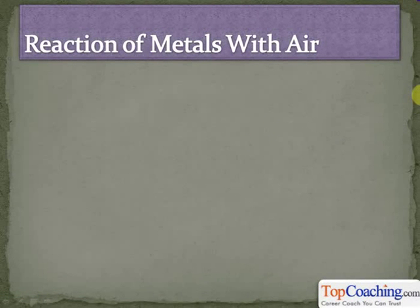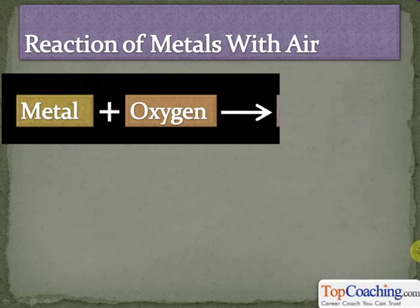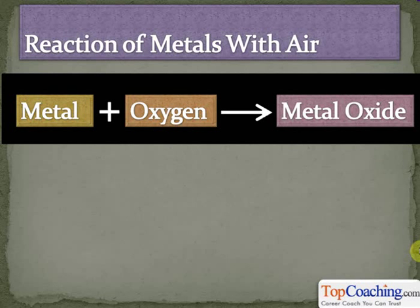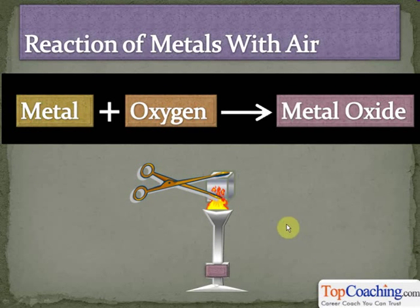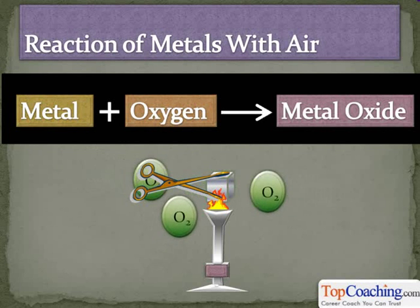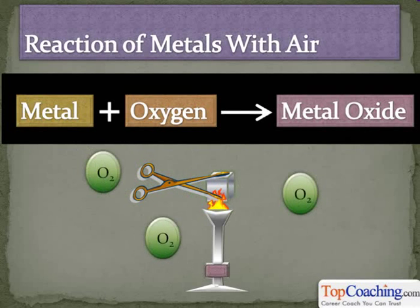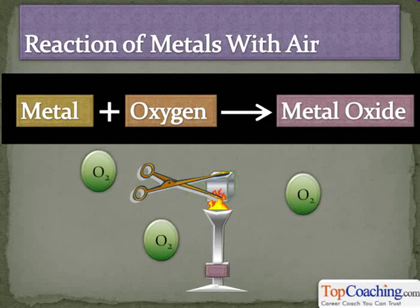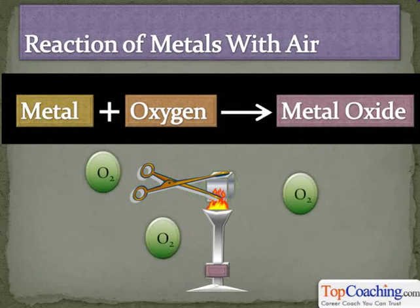Let's first begin with the reaction of metals with air. What happens when a metal reacts in air? Air contains oxygen and nitrogen — oxygen forms 21% of the air and nitrogen forms 79%. However, the nitrogen in the air is mostly inert, so metals don't react with it. They react with the oxygen of the air to form a special compound called a metal oxide. So if you take a metal and heat it in air, the metal will combine with the oxygen of the air and form a metal oxide. This is the standard reaction that occurs when a metal reacts in air. Now, metals react with oxygen to form metal oxides, but all metals don't react at the same rate. Some metals react very fast and vigorously, some react slowly, and there are some metals which don't react at all.